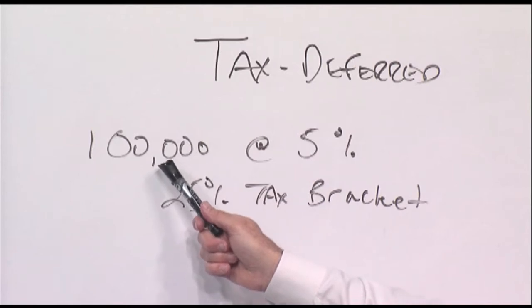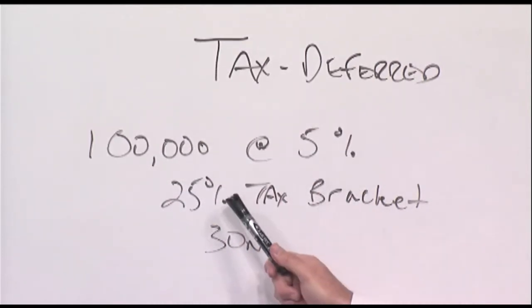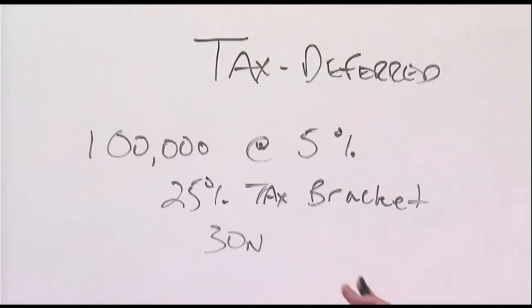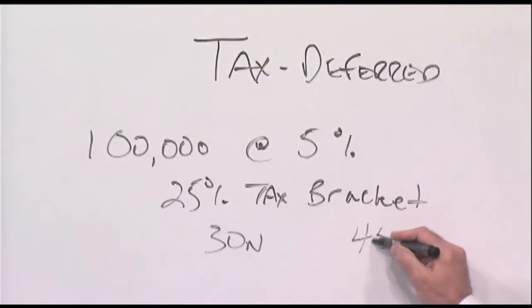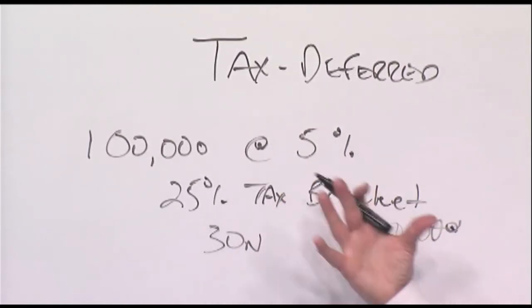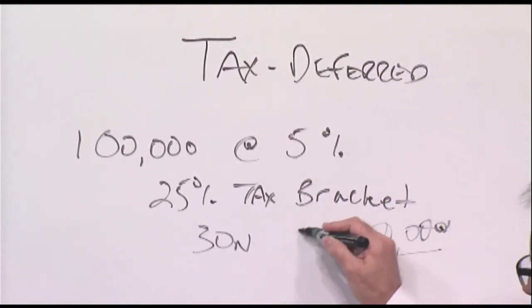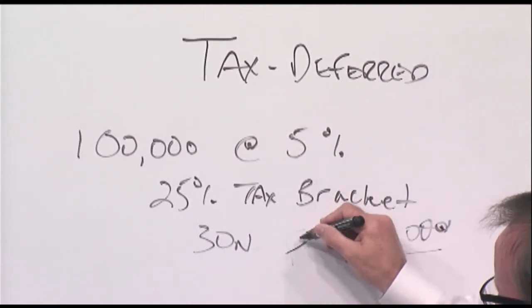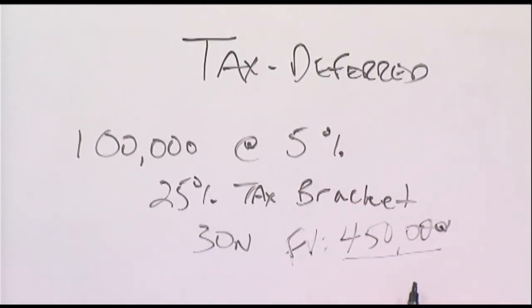Let's look at the calculation here. If you have $100,000 at 5% and you're in a 25% tax bracket — just ballpark figures — you're going to have approximately $450,000 in an account, depending on what it earns at around 5%. That's what we call your future value. But the problem with an annuity is you still owe the taxes.